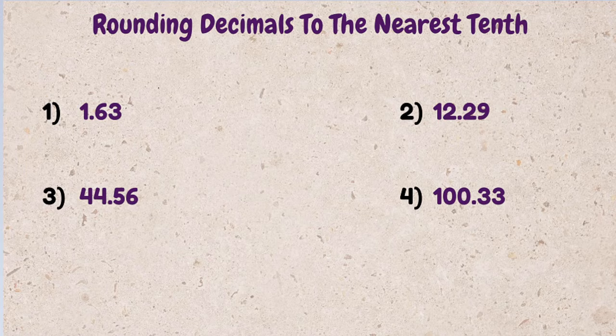If it's 5 or greater, we round the number in the tenth position up to the next digit. If it is 4 or lower, we keep it the same, or round down. Let's walk through a few examples.